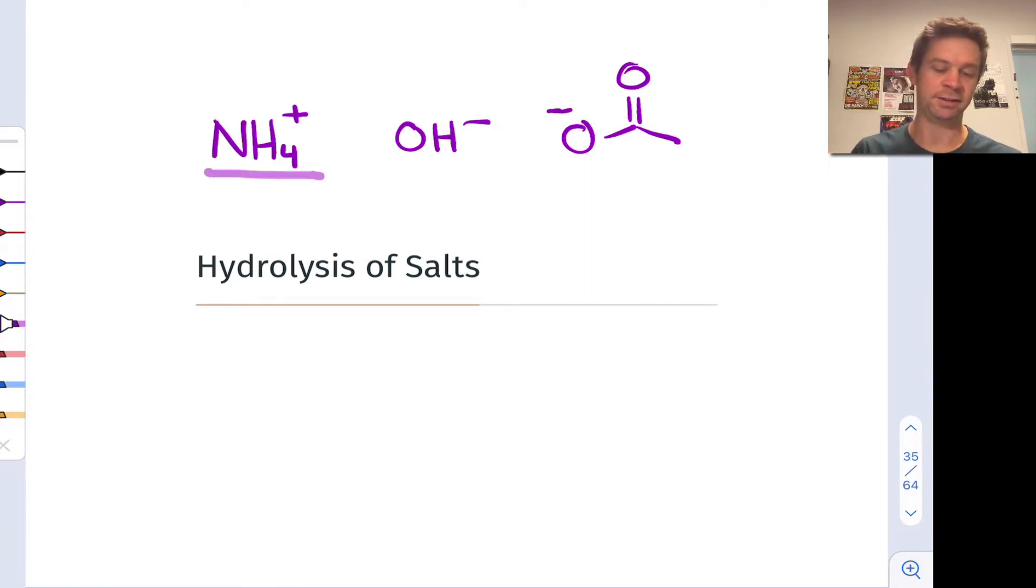We could assign, for example, a Ka value to NH4+ and think about its acid ionization reaction with water. Acid dissociation is perhaps more appropriate here since we're already starting with an ion. We can think about the proton transfer reaction and Kb for the acetate anion in water, and so on.